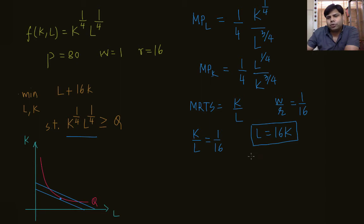We also know that this point lies on the isoquant, so the solution must also satisfy k to the power 1 by 4, l to the power 1 by 4, equals q. We have two equations, two unknowns, and we can solve for conditional capital and labor demands. When we solve the system, we get k equals q squared by 4 and l equals 4 q squared.